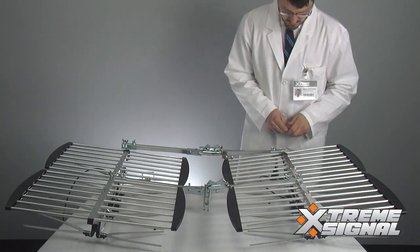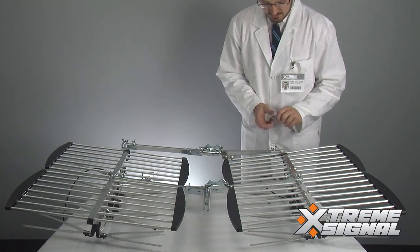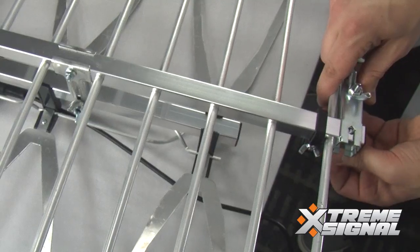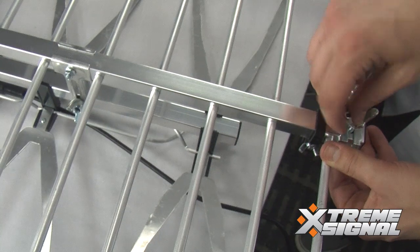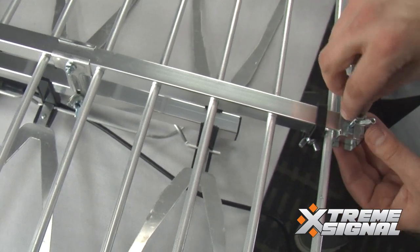Same as we did before, we're going to run this bolt through the bottom and tighten it back down with the wing nut. And once you do that step, you can go ahead and do that on the opposite side of the antenna.